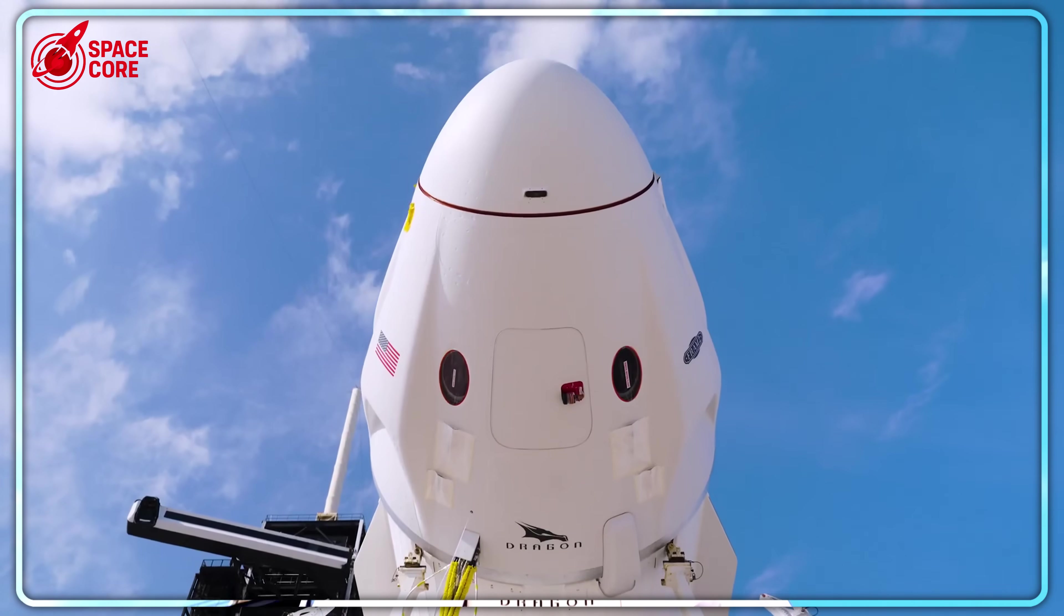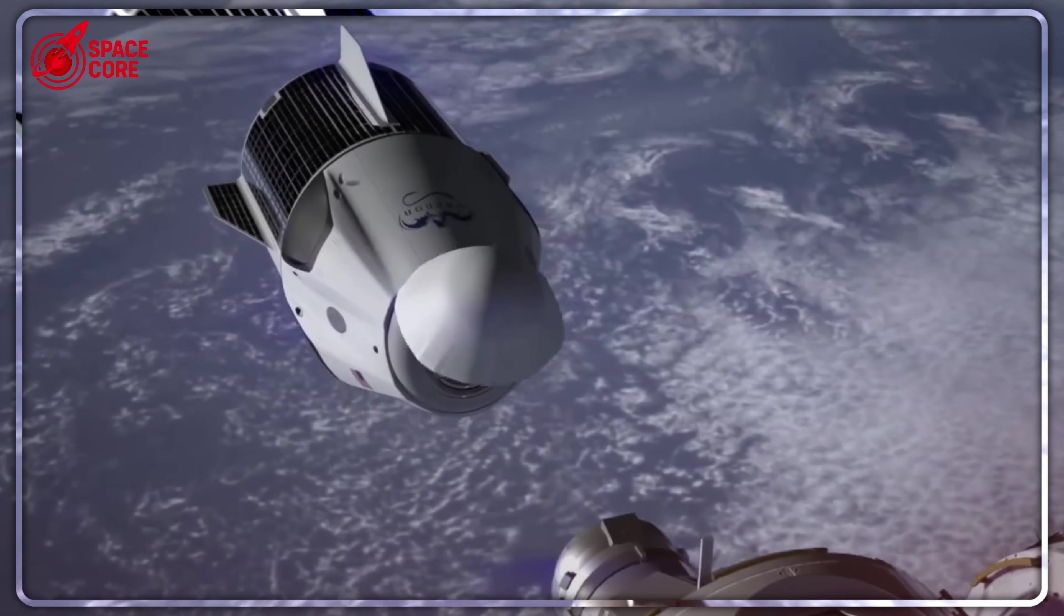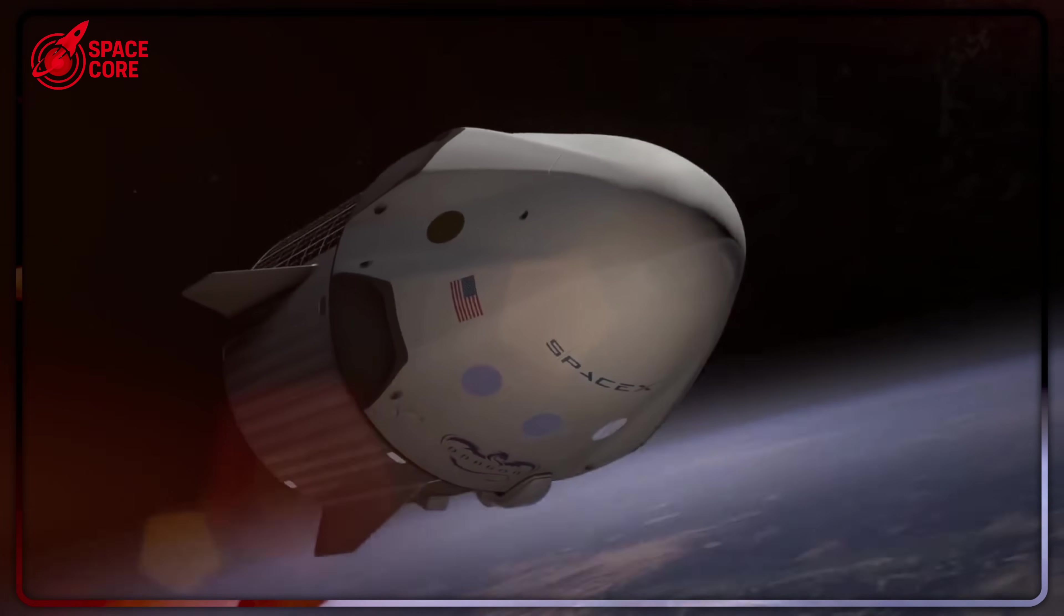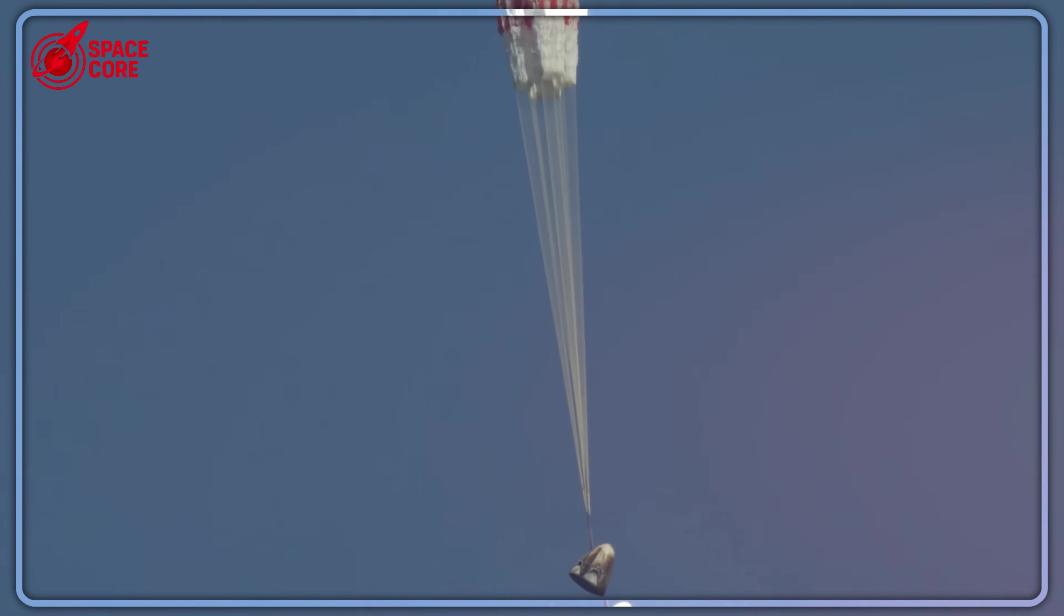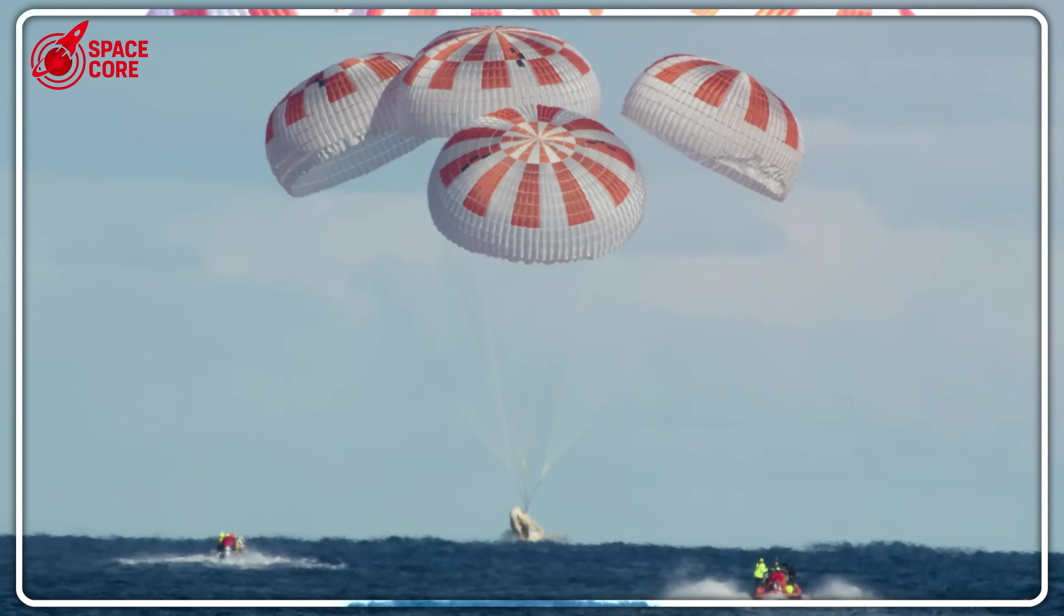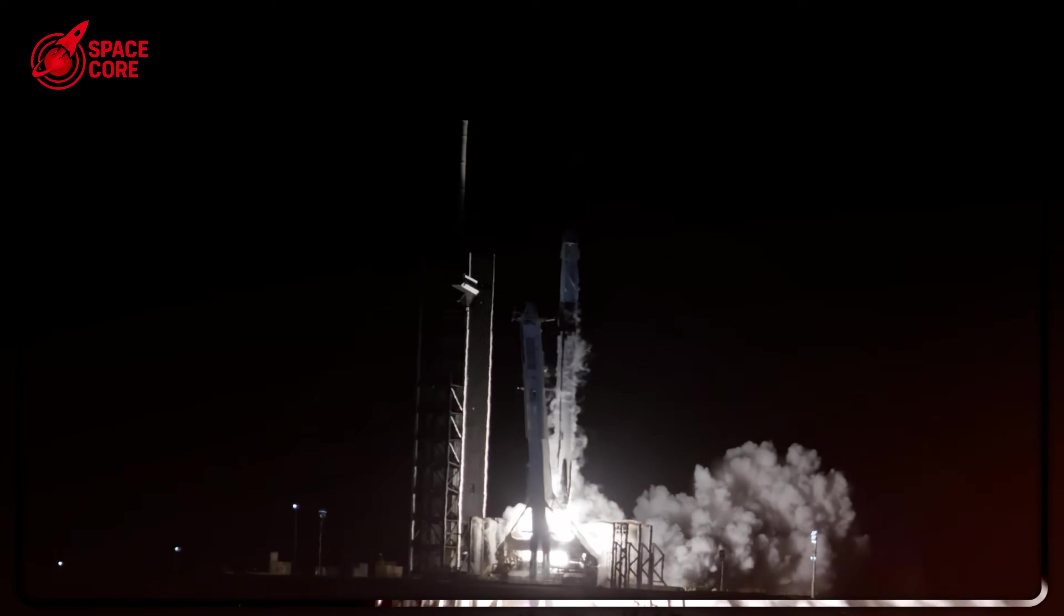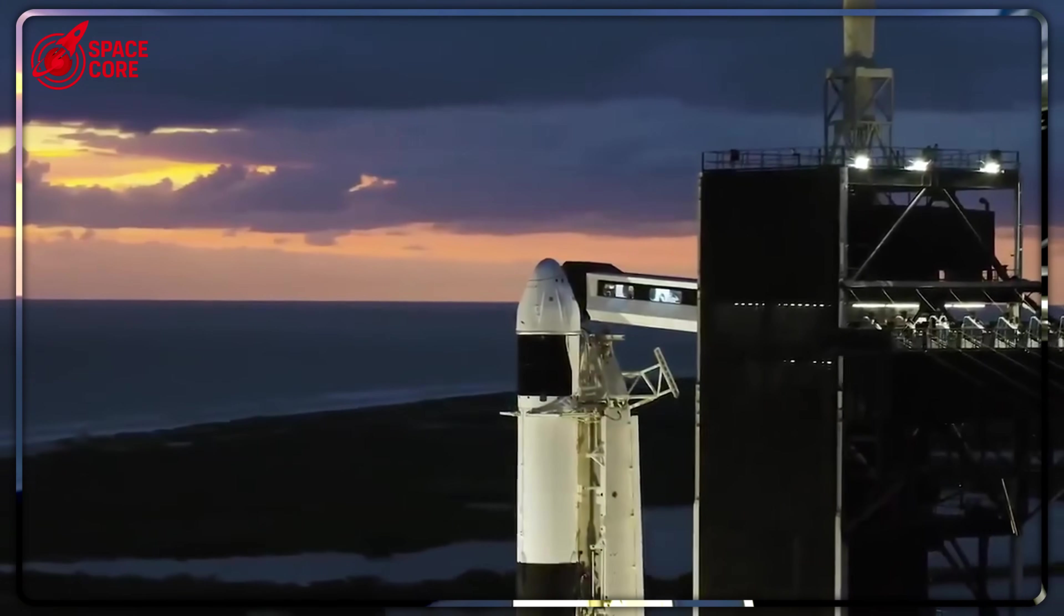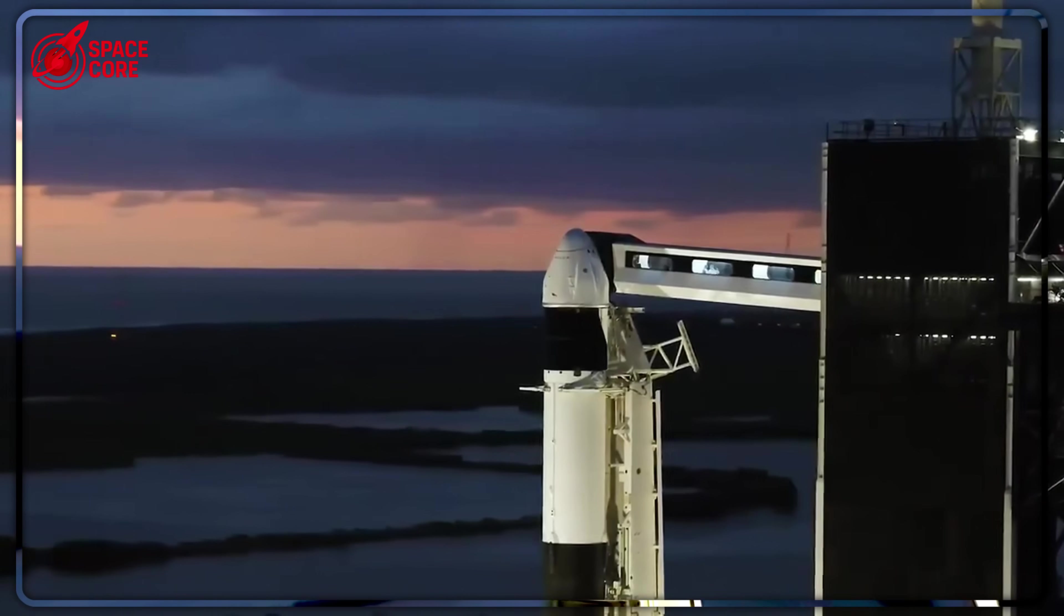Dragon was designed for one mission, getting people to orbit and bringing them home safely. But Musk's vision requires something fundamentally different. A vehicle that can land on the moon, hop between planets, refuel itself, and be reused like a commercial airliner. Starship is that vehicle. It's not just bigger than Dragon, it's a completely different category of spacecraft. Instead of splashing into oceans, Starship lands vertically using massive Raptor engines. Instead of being recovered by boats, it can be refueled and launched again within hours. Instead of carrying four to seven astronauts, it can transport 100 plus people along with massive cargo loads.